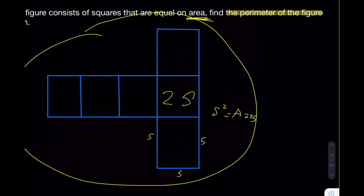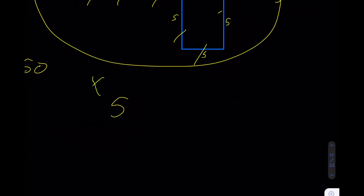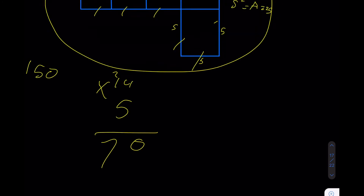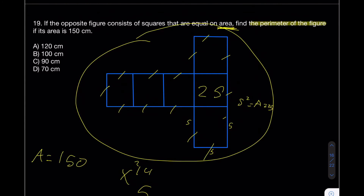The biggest mistake here is counting the internal side lengths — we only want external sides. Counting the external sides: 1, 2, 3 ... 14 external sides in total. Multiply 14 by 5 to get 70. That is the perimeter of the figure.